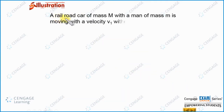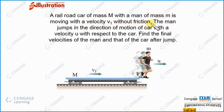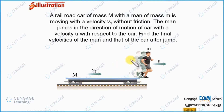In this illustration, a railroad car of mass capital M with a man of mass small m is moving with velocity v1 without friction. The man jumps in the direction of motion of the car with velocity u with respect to the car. We need to find the final velocities of the man and the car after the jump. This is the car moving on rails without friction, and initially both the man and car move with common velocity v1.